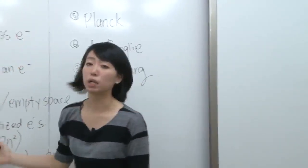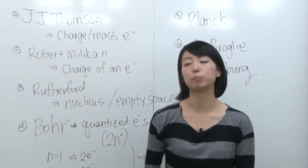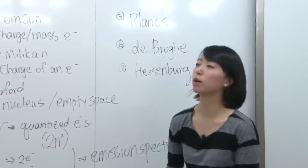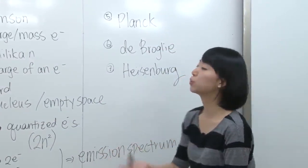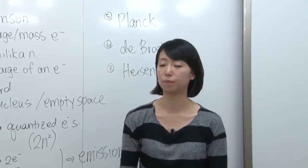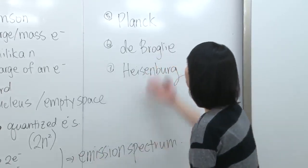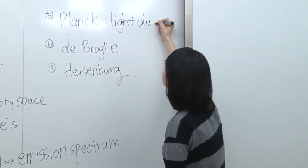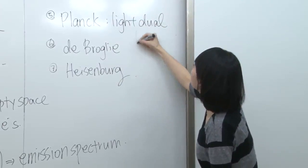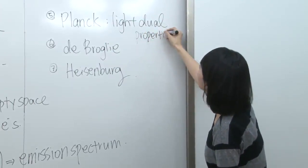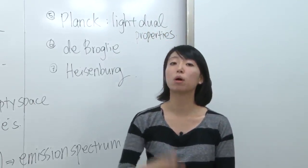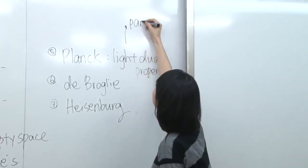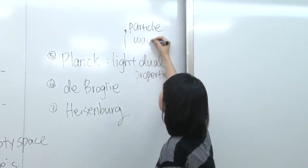Up to here, scientists believed that electrons are just particles we could see. But these three scientists were confused because there were dual properties when it comes to electrons and light photons. Planck said light has dual properties — meaning light could be particles, but also a wave. Particle is something we can see, but a wave we can't really see; we can visualize it as a graph, but we can't see each particle. These two are completely different properties.